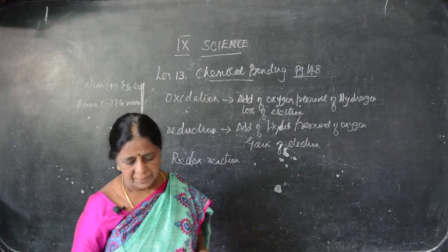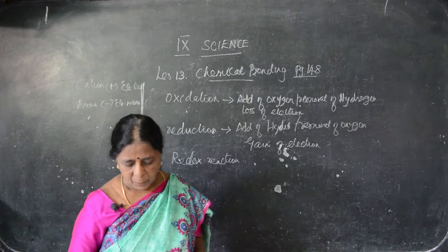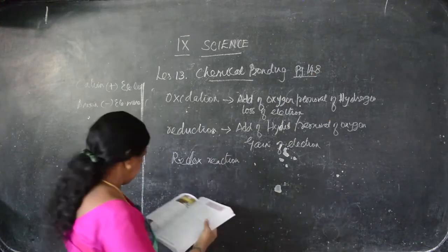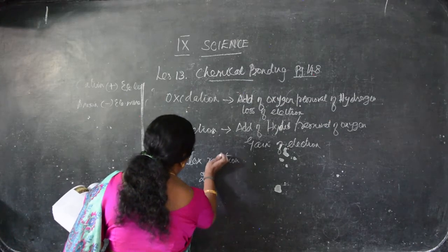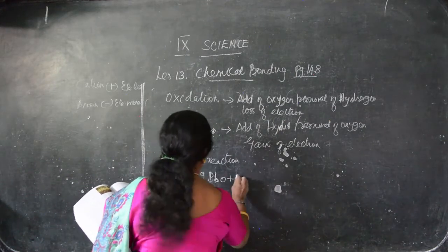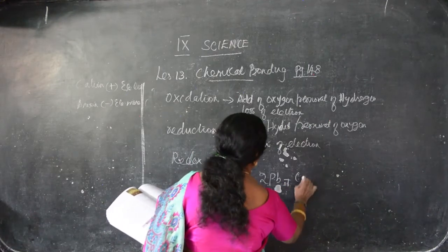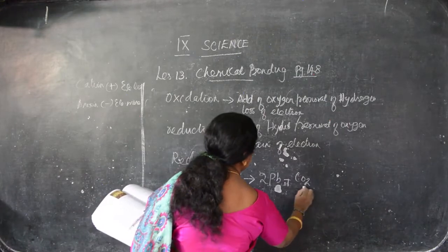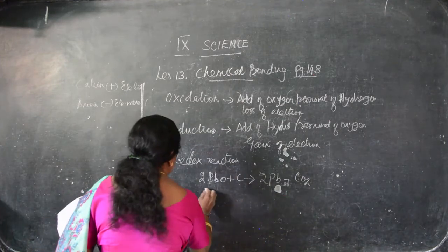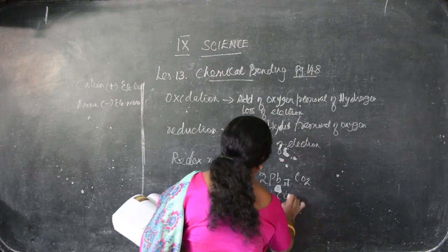Both together this is known as redox reaction. Generally, oxidation and reduction occur in the same reaction simultaneously — if one of the reactants is oxidized, the other gets reduced. Such reaction is known as redox reaction. For example: 2PbO (lead oxide) combined with one molecule of carbon becomes two molecules of lead, and the oxygen combines with carbon to become carbon dioxide.